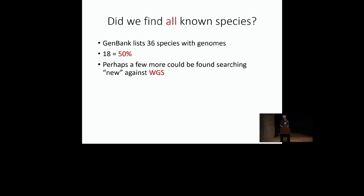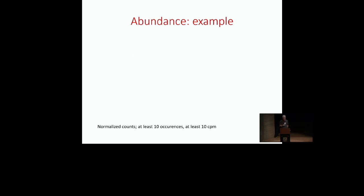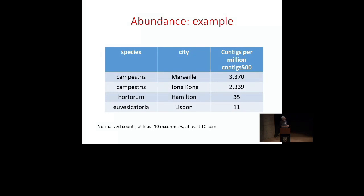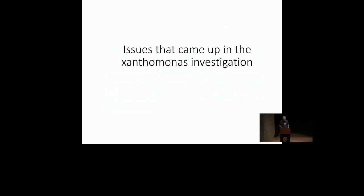GenBank lists 36 Xanthomonas species with genomes, and we found 18 — exactly half. Perhaps a few more could have been found if I had searched against the WGS (whole genome shotgun) database at GenBank, which is huge but raises computational power issues. Regarding abundance, we found Xanthomonas campestris in relatively high abundance in Marseille and Hong Kong, in terms of contigs per million contigs of at least 500 base pairs. The reason I'm not spending more time on this is because these results are difficult to interpret — why campestris showed up in such large numbers in these two port cities, I have no clue.